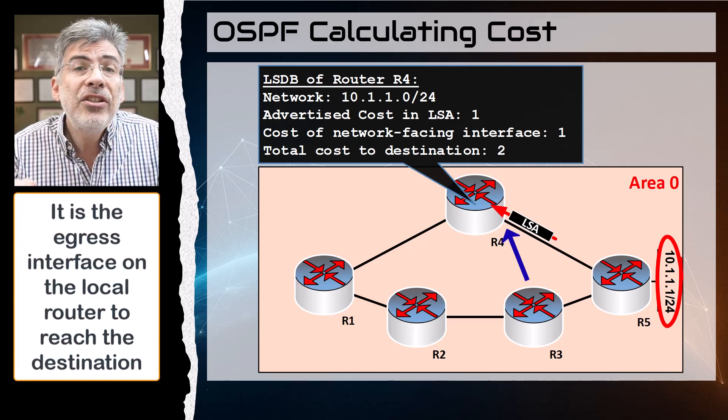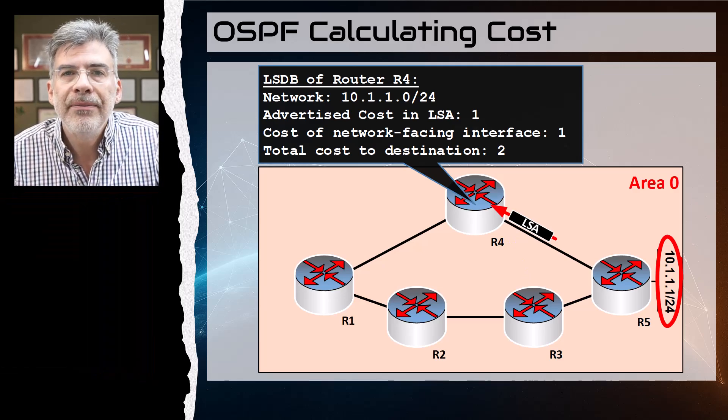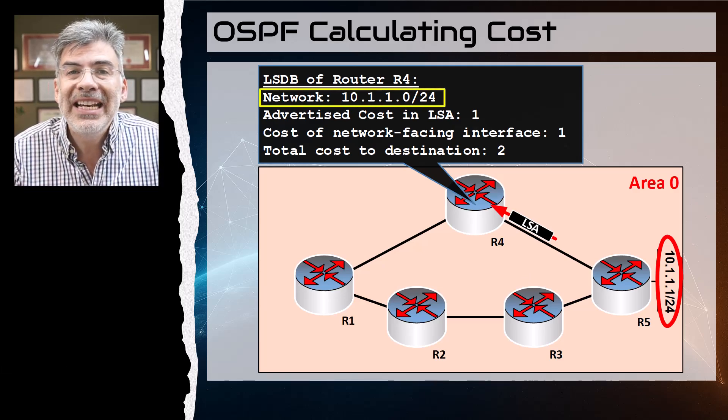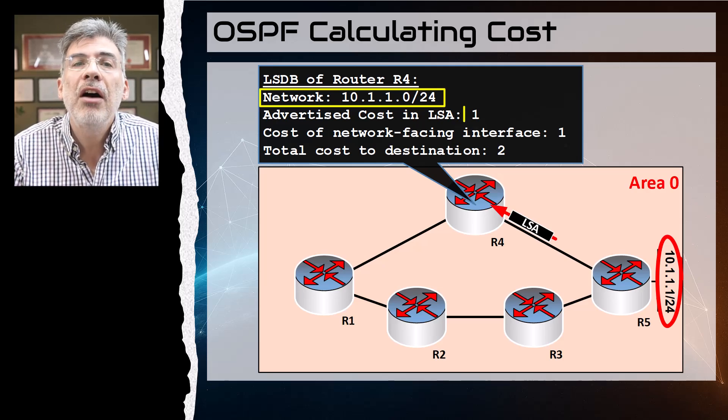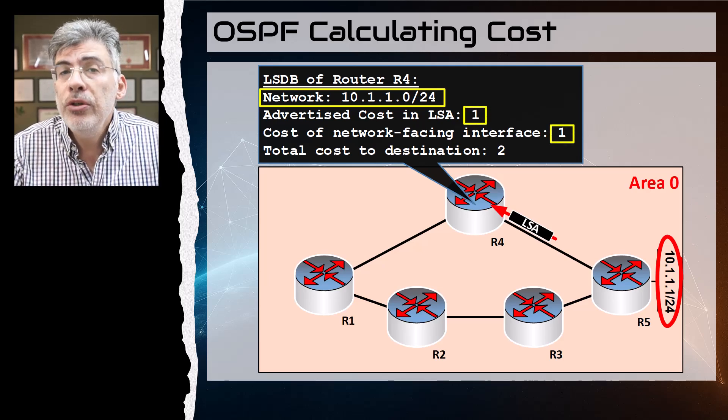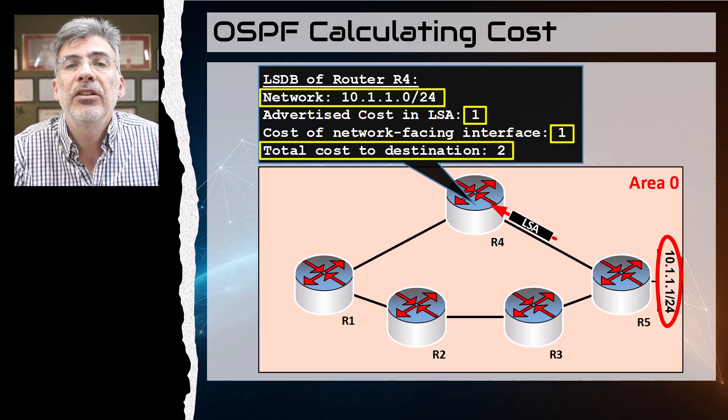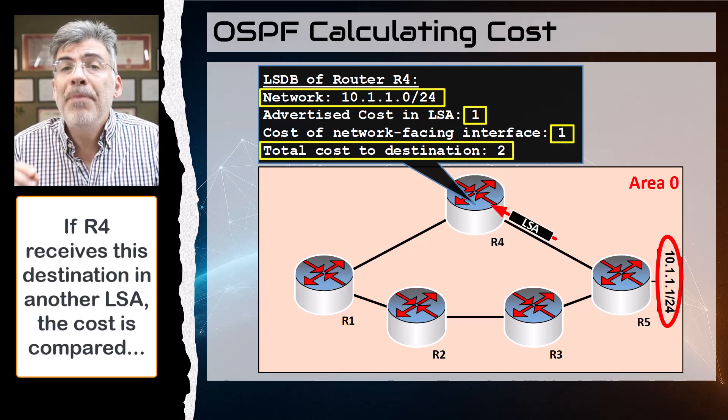It's also the interface through which the LSA is learned. Now this too has a cost of one, so when it puts the route in its own LSDB, it places a total cost of one plus one, two, for that particular destination.